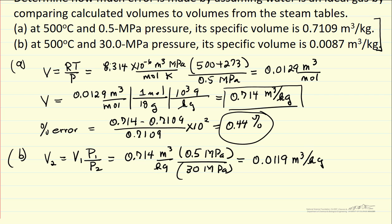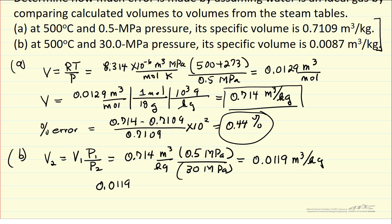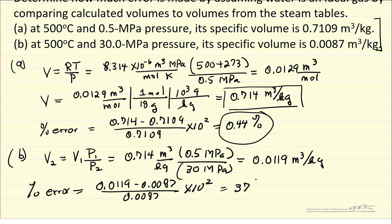We can see the value from the steam tables is smaller. So 0.0119 minus 0.0087, divided by 0.0087, times 10 squared gives the percent error — and I get 37% error. Of course, this is not even a vapor; these conditions are above the critical pressure, so we wouldn't expect the ideal gas law to be very close to the actual value.